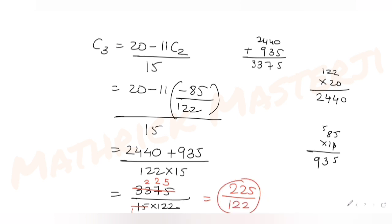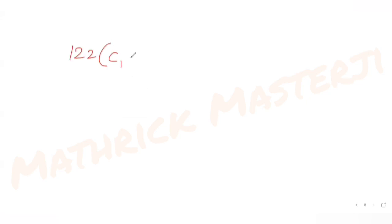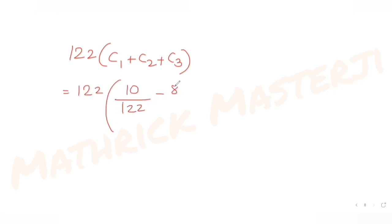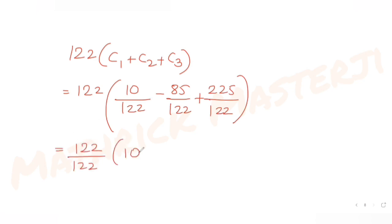Now computing 122·(c1 + c2 + c3) = 122·(10/122 + (−85/122) + 225/122). The 122 cancels, leaving 10 − 85 + 225 = 150.